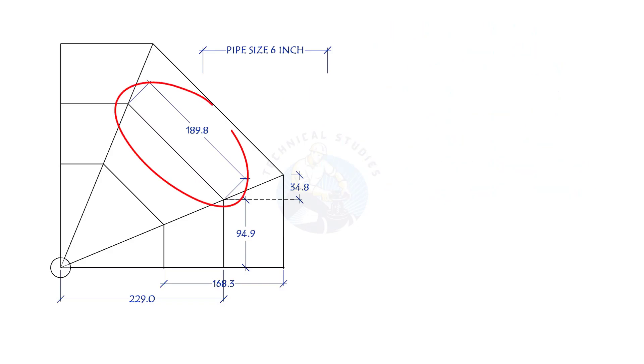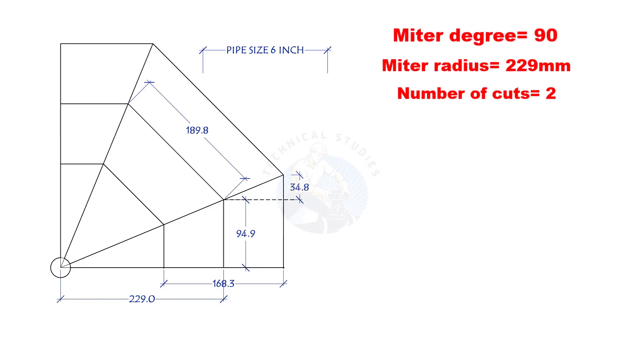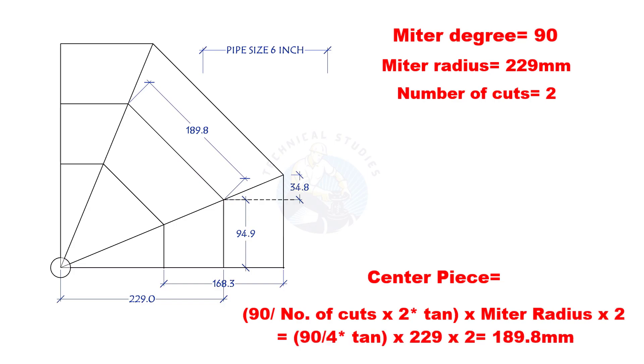Let us calculate the centerpiece length. To calculate the centerpiece length, we need to know: mitre degree, center radius, and the number of cuts. 90-degree divided by number of cuts into 2 tan multiplied by the mitre radius into 2.